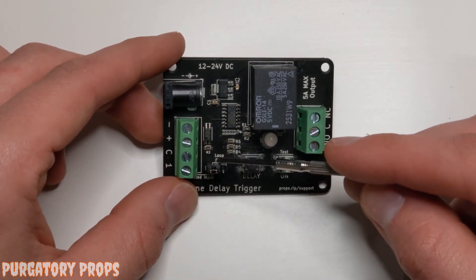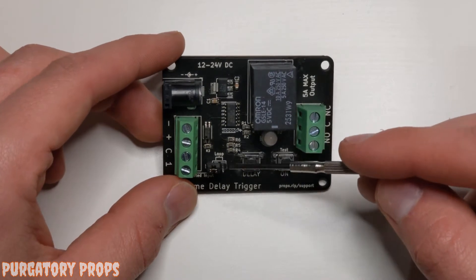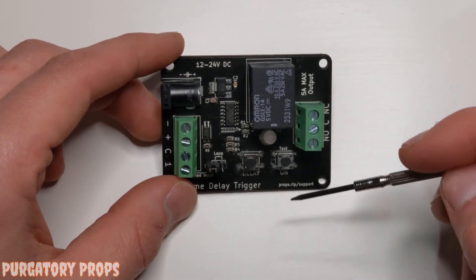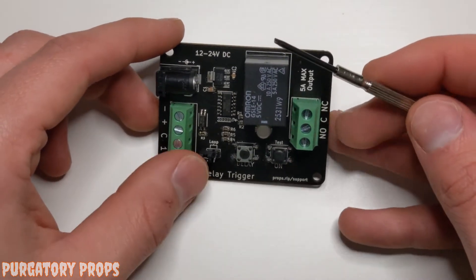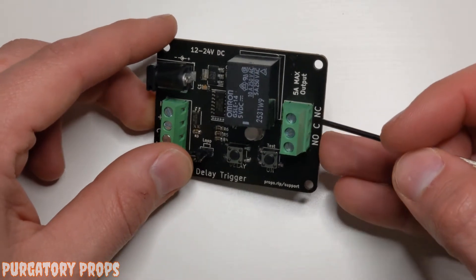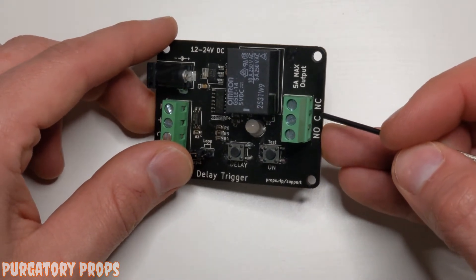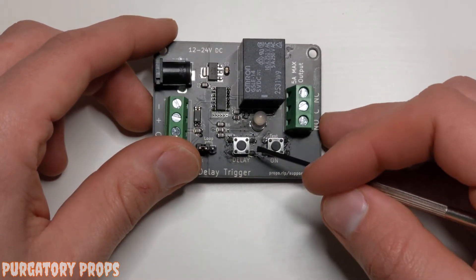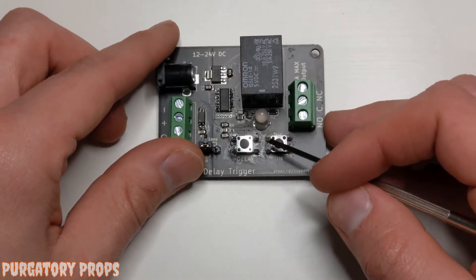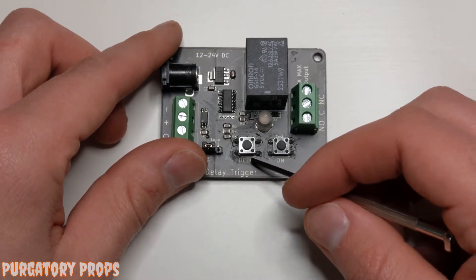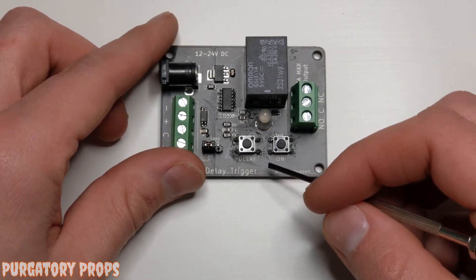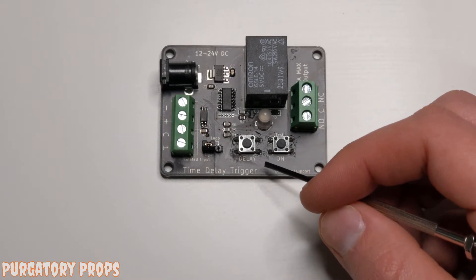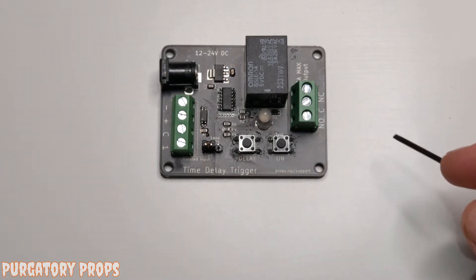Right next to it is this jumper that you can move over to put it into continuous loop mode. On the right side you have the outputs, it's a relay output so you have the common terminal, the normally open terminal, and the normally closed terminal. Down here these two buttons are used to program the controller. The delay button programs how long the delay is and the on button programs how long it's on.